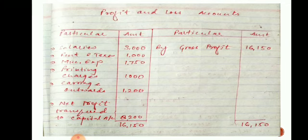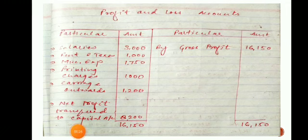Salary, rent and taxes, miscellaneous expenses, printing charges, and carriage outward are all recorded on the debit side, as these are expenses spent for the sale of goods. We add all these amounts and subtract from sixteen thousand one hundred fifty rupees, giving us a net profit of eight thousand two hundred rupees. This net profit is transferred to the capital account of the entrepreneur.